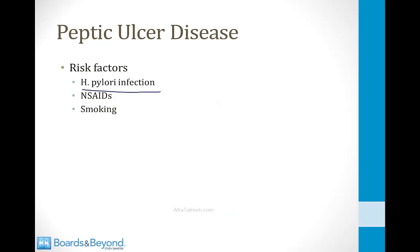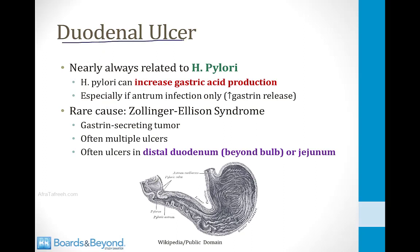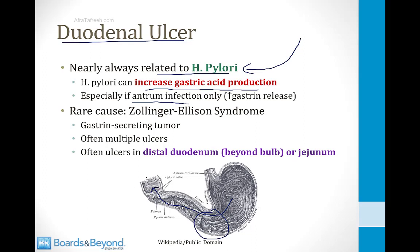H. pylori infection is an important risk factor for peptic ulcer disease. In H. pylori infection, increased acid secretion can destroy the mucosal layer of the stomach or duodenum. NSAIDs and smoking are also important risk factors. Most patients with peptic ulcer disease have duodenal ulcers caused by H. pylori. When H. pylori infects the antrum, it stimulates G cells to release more gastrin, leading to excess acid that rolls across the pylorus into the proximal duodenum, where the duodenum cannot neutralize it quickly enough, producing duodenal ulcers.